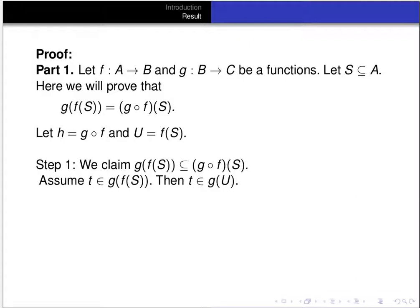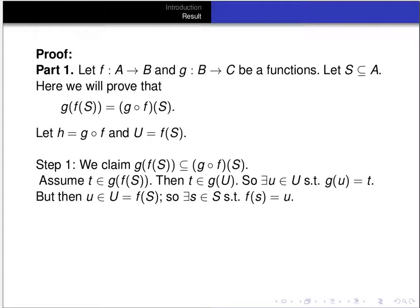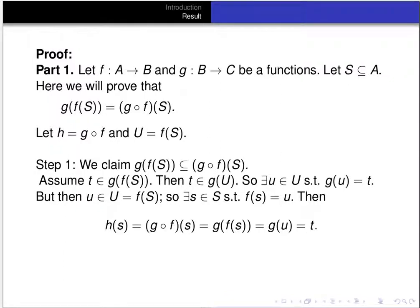So t is an element of the image of U under g, meaning there exists some element u in U such that g of u equals t. Now u is in U, which is the image of S under f, so there exists some element s in S such that f of s equals u. Now let's see what happens to s under h, i.e., g composed with f. h of s equals g of f of s, and since f of s equals u and g of u equals t, we get h of s equals t.